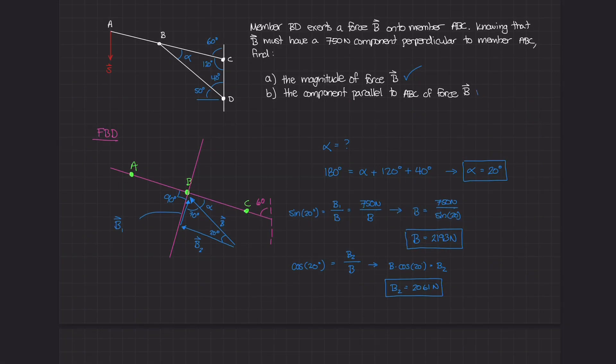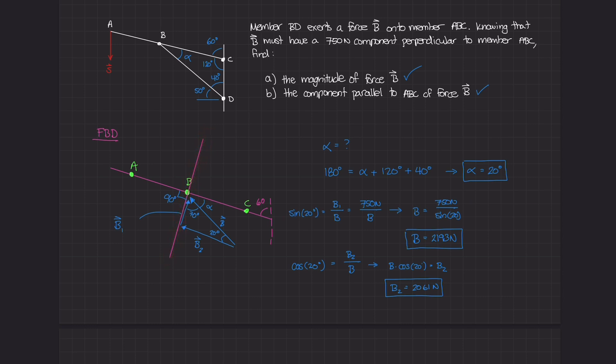That takes care of both parts of the question. Even though this diagram might seem complex at first, you just need to identify where to draw your axes. Once you do that, you can resolve the components and use trigonometry to find the unknowns. Great job.